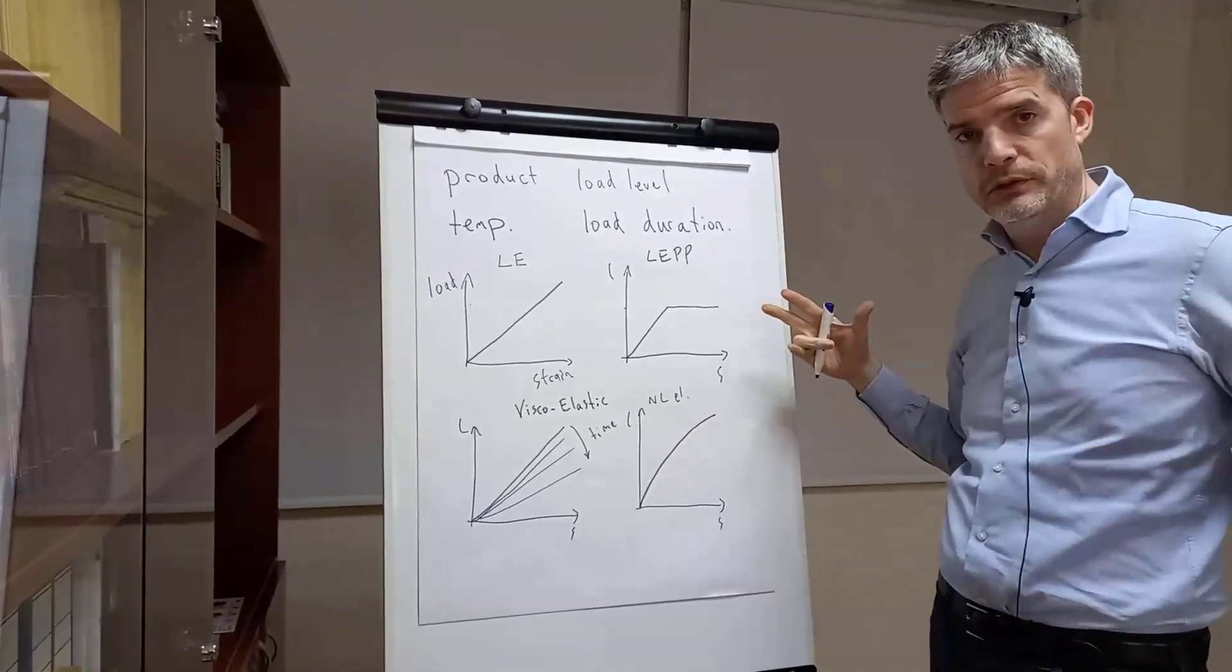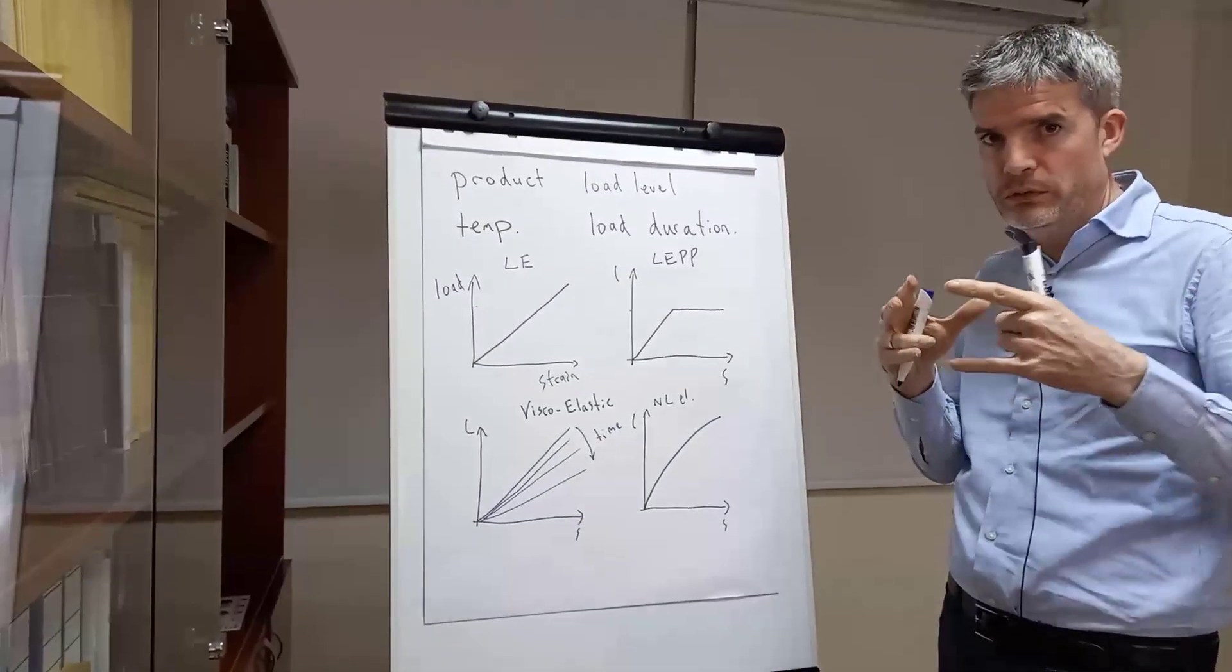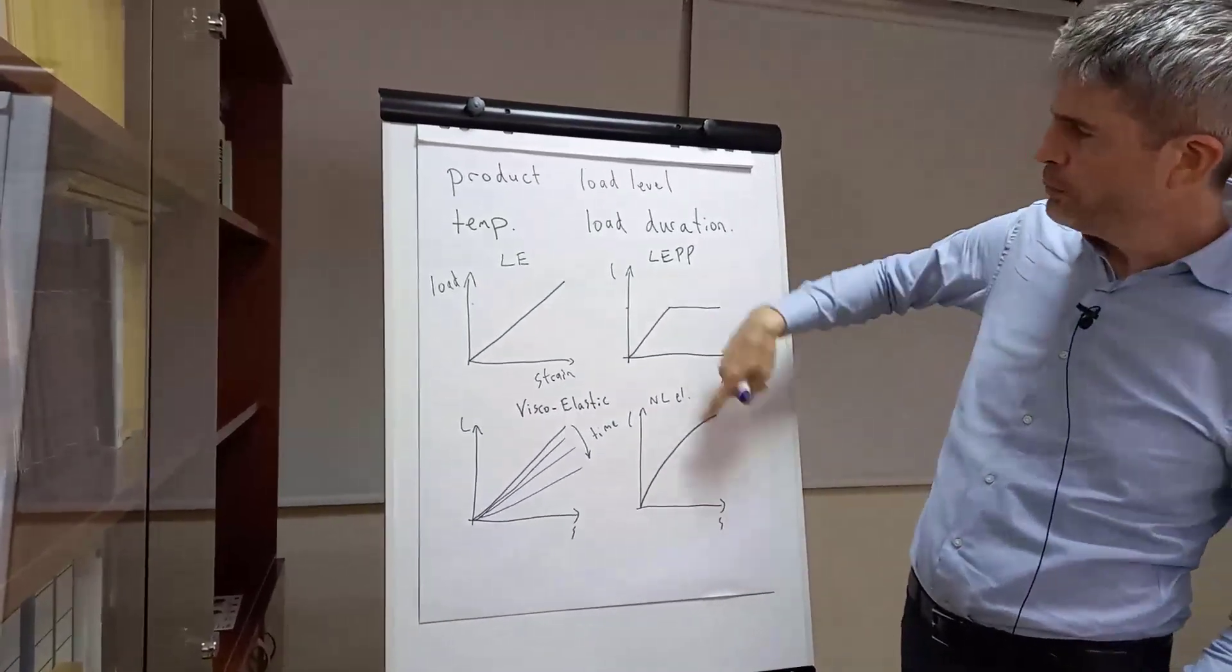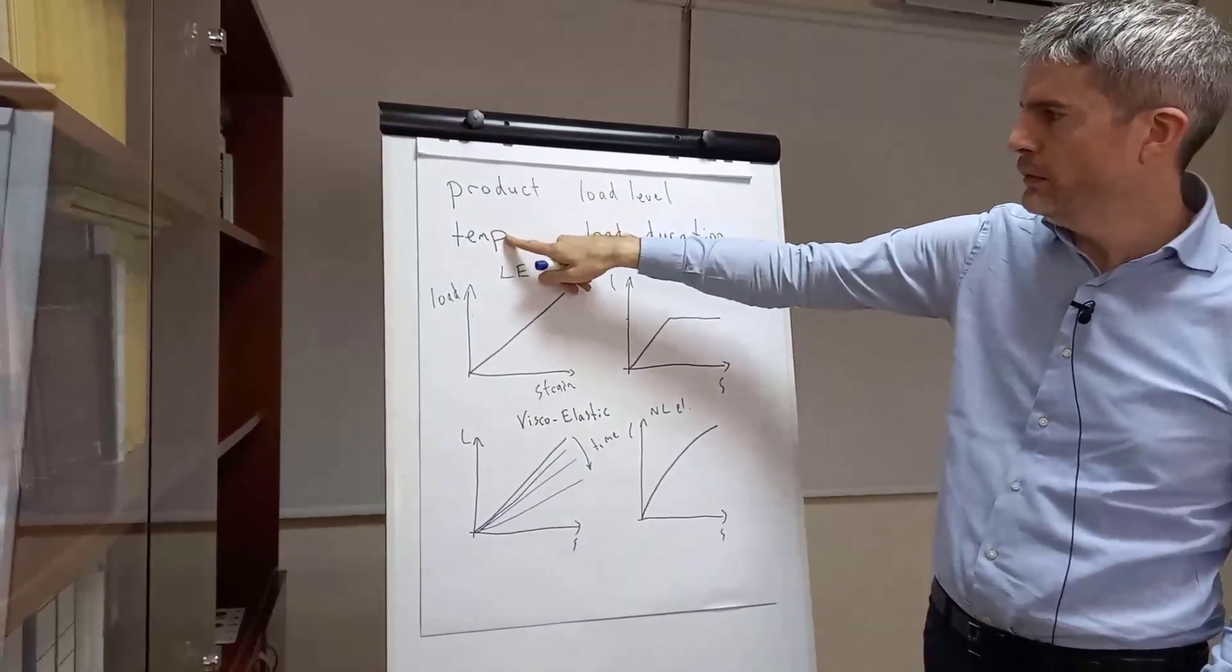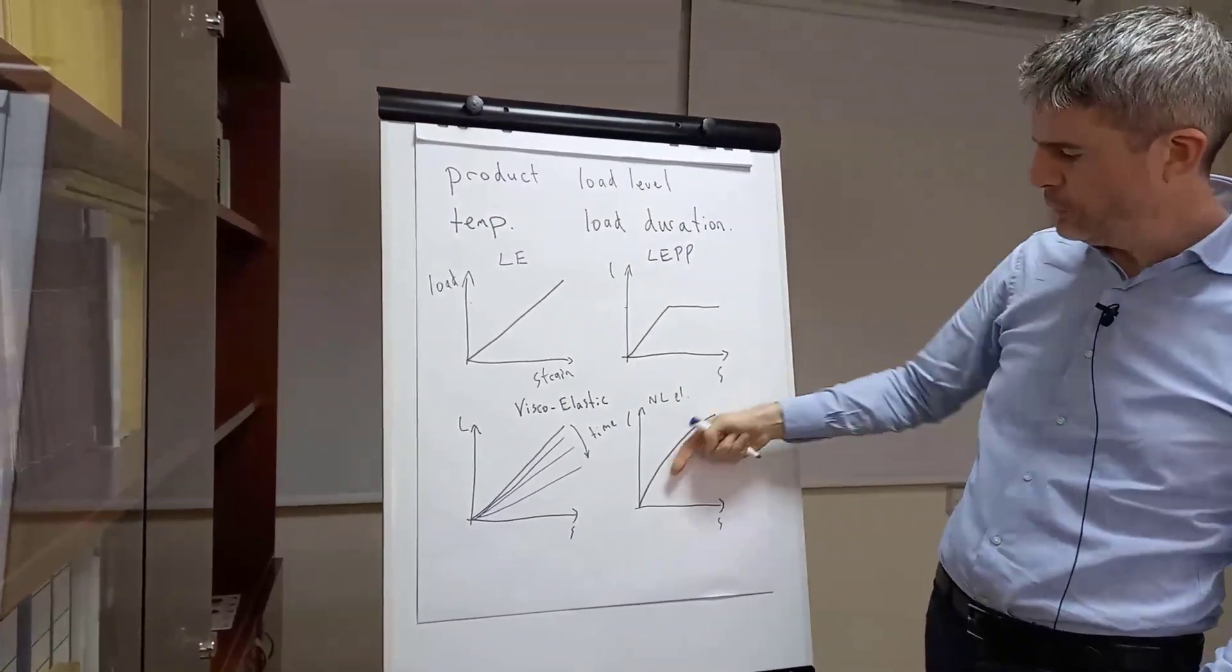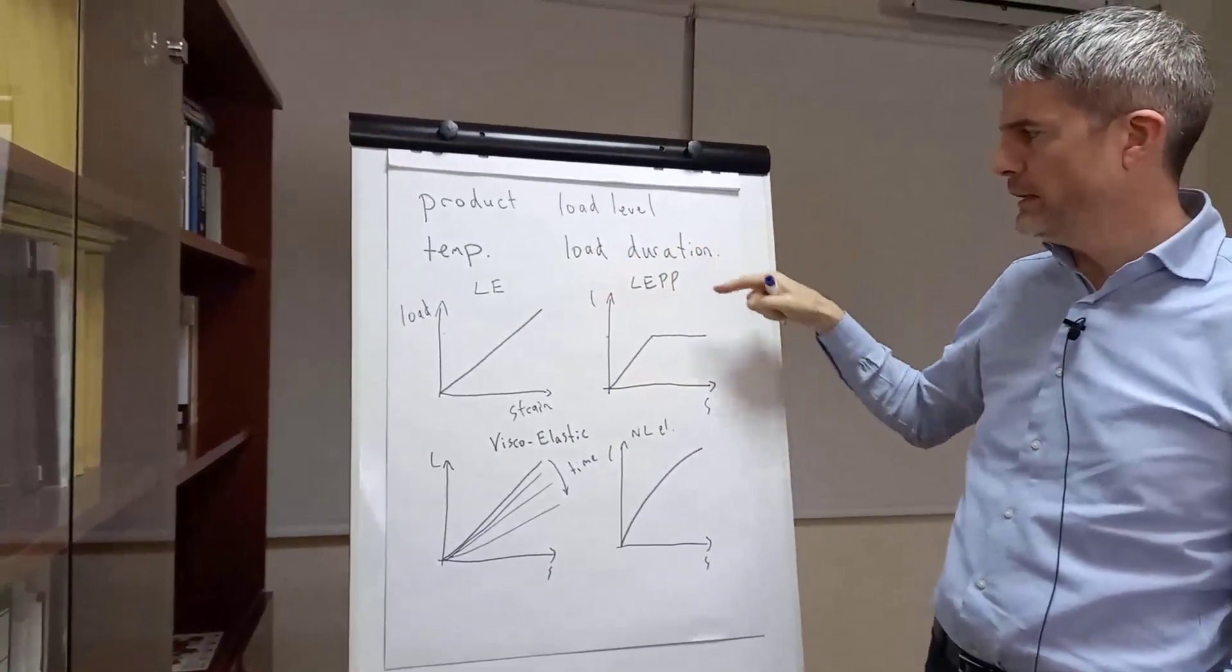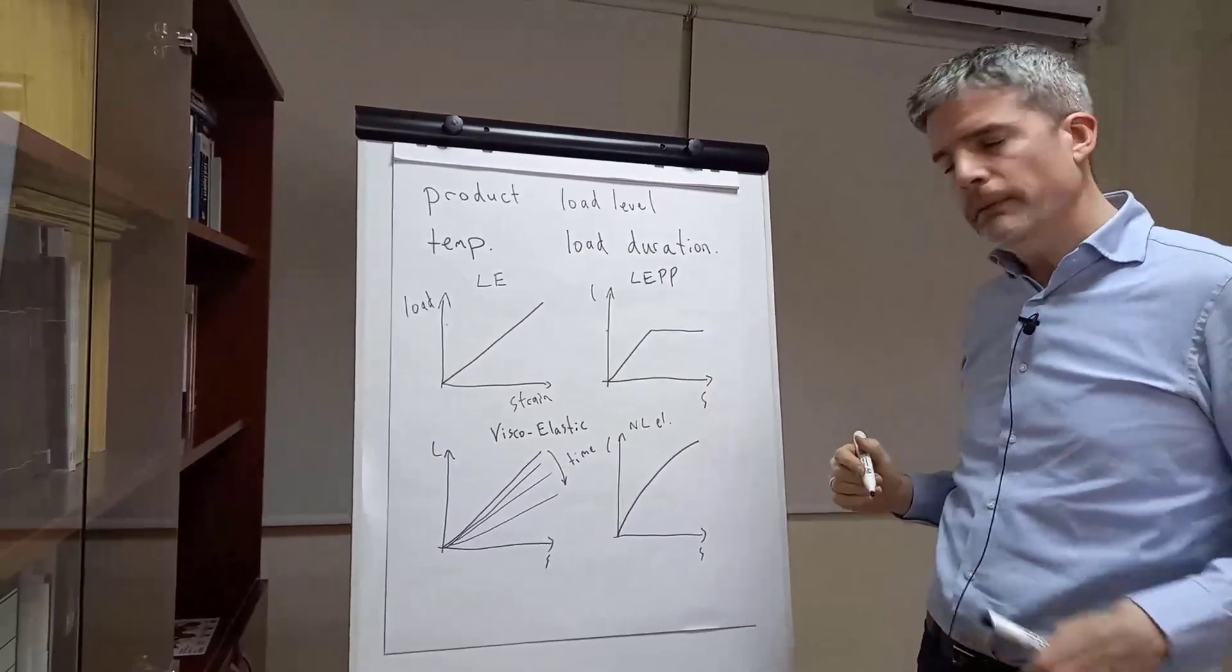The good thing about this is it takes into account changes in load, also changes in the load along the length of the geogrid. It's very unusual to get a constant load all the way along the geogrid, so this will give you the different stiffness levels along the geogrid and also different levels where the geogrid occurs. It will be appropriate for the product. You need to select it for the right design temperature level. It automatically accounts for the change in load level - the change in stiffness here, the slope changes with the load level. The only thing it will not take into account is changes in the load duration, so you just need to select it for the right duration. That's why it's called an isochronous curve.